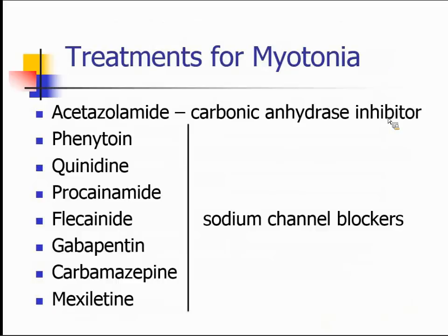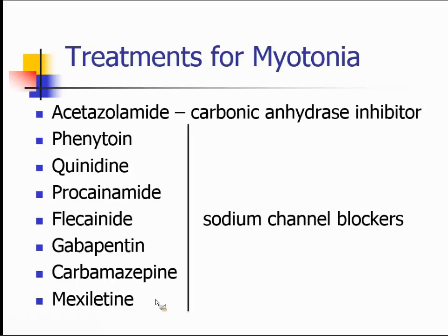For treatment of myotonia — carbonic anhydrase inhibitors for sodium channel myotonia, based on non-randomized controlled studies; as far as I know there's never been a randomized controlled trial looking at acetazolamide. For the remaining non-dystrophic myotonias and the myotonia of myotonic dystrophy, we use sodium channel blockers primarily — either anticonvulsants like gabapentin, carbamazepine, or phenytoin, or cardiac anti-arrhythmic agents like quinidine, procainamide, or flecainide, and most recently mexiletine. Mexiletine is the only drug ever shown to be of benefit in a randomized controlled trial — there have been a couple of trials for both myotonic dystrophy type one and non-dystrophic myotonias.